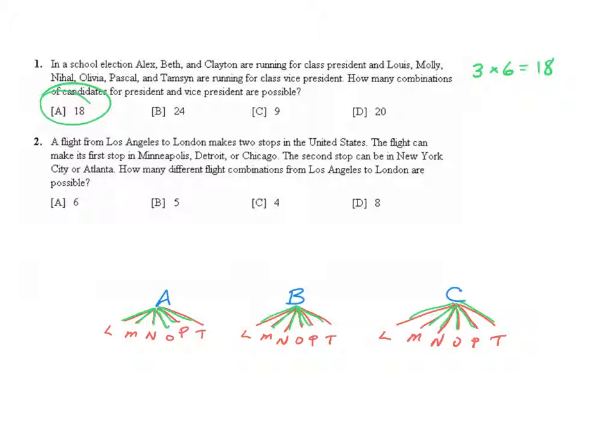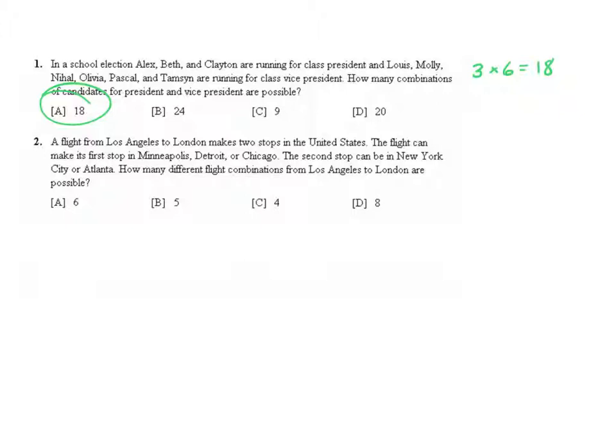Question two: A flight from Los Angeles to London makes two stops in the United States. The flight can make its first stop in Minneapolis, Detroit, or Chicago. The second stop can be in New York or Atlanta.